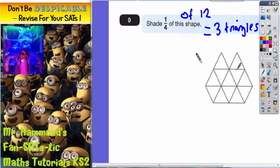We could do this one over here, we could do this one here, and we could do this one at the top here. As long as you pick three random triangles and shade them in, you'll get the correct answer because a quarter of 12 is 3.